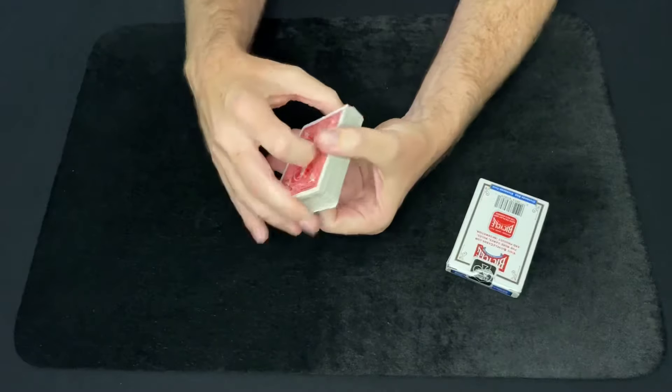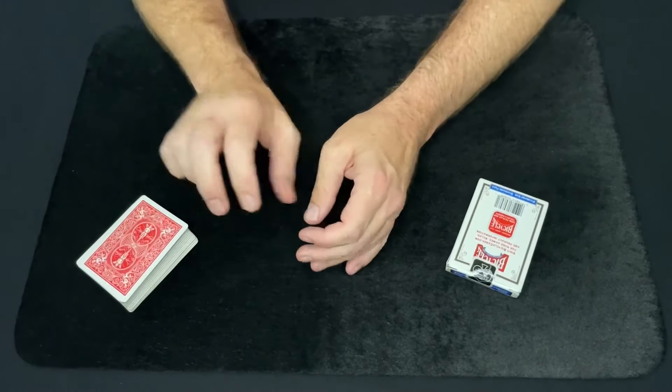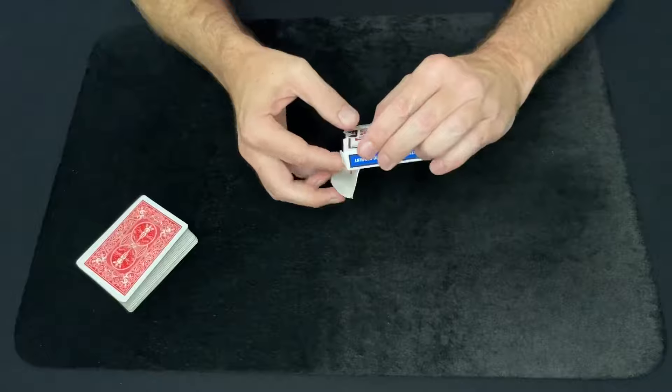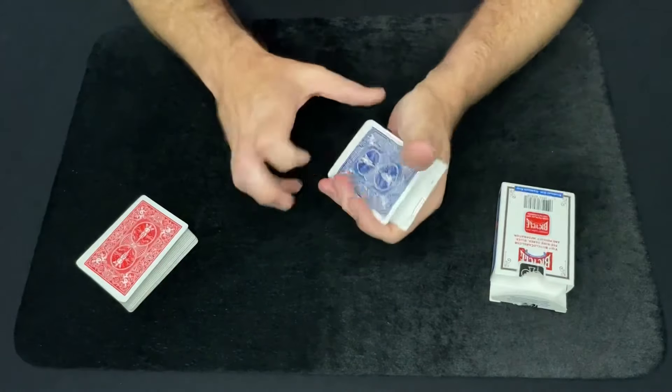So that was the Hindu shuffle. You can do a top force, a ripple force, a cut force, anything you want. Get them to pick that four of diamonds. Now I go over here. We already have our double face card set up.